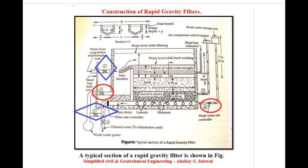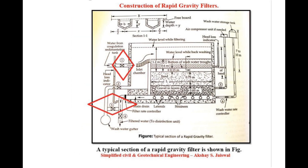After the washing of the filter has been completed, valve 2 and 6 will be closed and valve number 1 and 3 are opened. This restores the inlet supplies through valve 1, but the filtered water in the beginning is not collected and is washed for a few minutes through valve number 3 to the gutter. This is necessary because the remains of wash water must be removed from voids of the filter and a surface mat must be allowed to be formed on the sand.